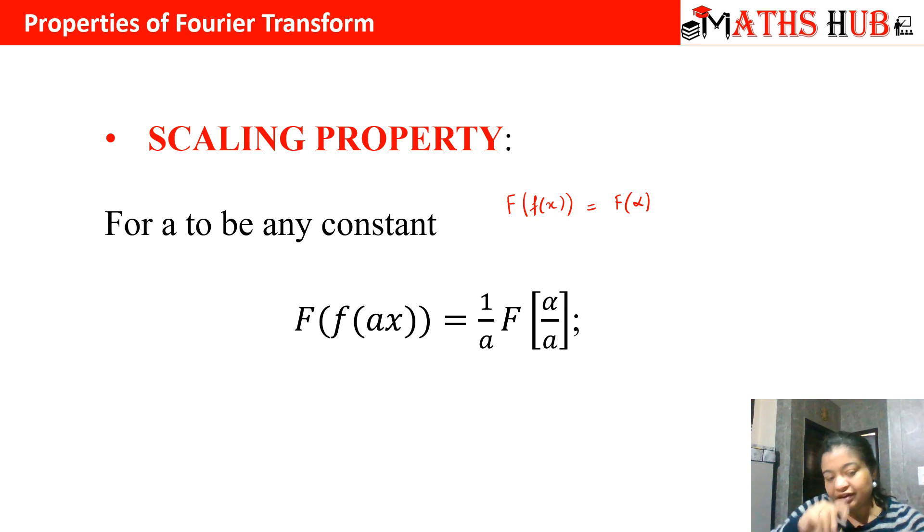Fourier transforms are used for speech recognition and image processing. In image processing you might have seen that we sometimes pick an image and then enlarge it or make it small. When we make it large, we are multiplying it with a scaling factor. We just have a button to click, but what is happening behind the scenes is that we are multiplying it with a scaling factor a.